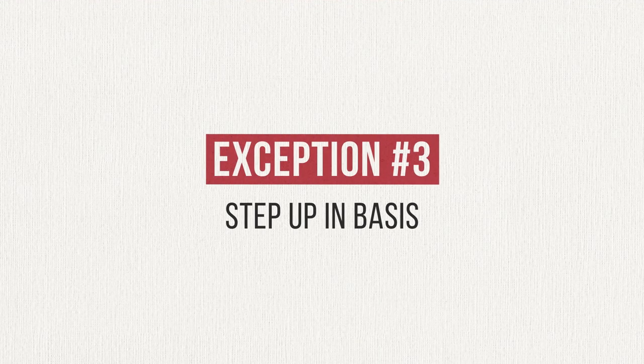Number three is something called step-up in basis, and it's one of the biggest tax loopholes in existence. Let's say you've spent your entire life investing in the stock market, and your investment portfolio is now worth tens of millions of dollars. If you cashed out and sold them all, you'd owe millions in capital gains taxes. So you hold on to them. When you die, all of those investments are passed on to your heirs, and the amount you bought them for — your basis — gets stepped up to their current value. So your heirs could immediately sell all of those investments and pay absolutely no capital gains tax. This is how vast amounts of wealth get passed down from generation to generation in America.